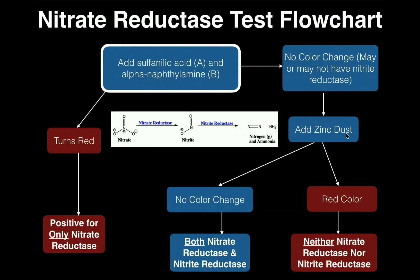After you add the zinc dust, assuming no color change initially: if there is still no color change, that result indicates you have both enzymes present — both nitrate reductase and nitrite reductase. However, if you add the zinc dust and it turns red, that indicates you have neither enzyme — you do not have nitrate reductase and you do not have nitrite reductase.